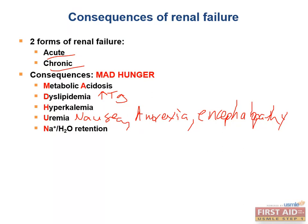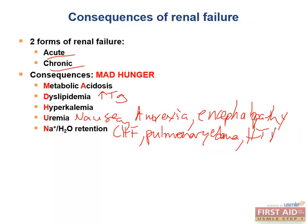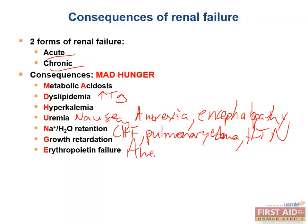Due to the inability to excrete filtrate, sodium and water are also retained, and this leads to things like congestive heart failure, pulmonary edema, and hypertension. And because the kidney is involved in vitamin D hydroxylation, this can lead to growth retardation in children with renal failure. The kidney is also responsible for producing erythropoietin, so patients with renal failure can have anemia.